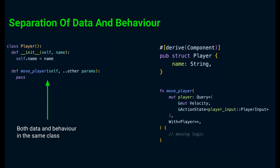The first advantage is we are separating data from its behavior. On the left we have the player class. All the data of the player is stored in the player class. One such field is the player name, and we can have multiple other fields like player speed, health, etc.